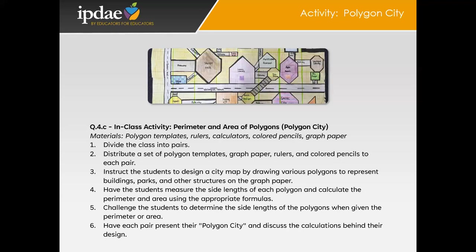Distribute a set of polygon templates, graph paper, rulers, and colored pencils to each pair of students. Instruct them to design a city map by drawing various polygons on the graph paper, which will represent buildings, parks, and other structures. This creative exercise will engage their problem-solving and spatial reasoning skills. Once the students have completed their city maps, have them measure the lengths of each polygon using rulers, and then ask them to calculate the perimeter and area of each polygon using the appropriate formulas.